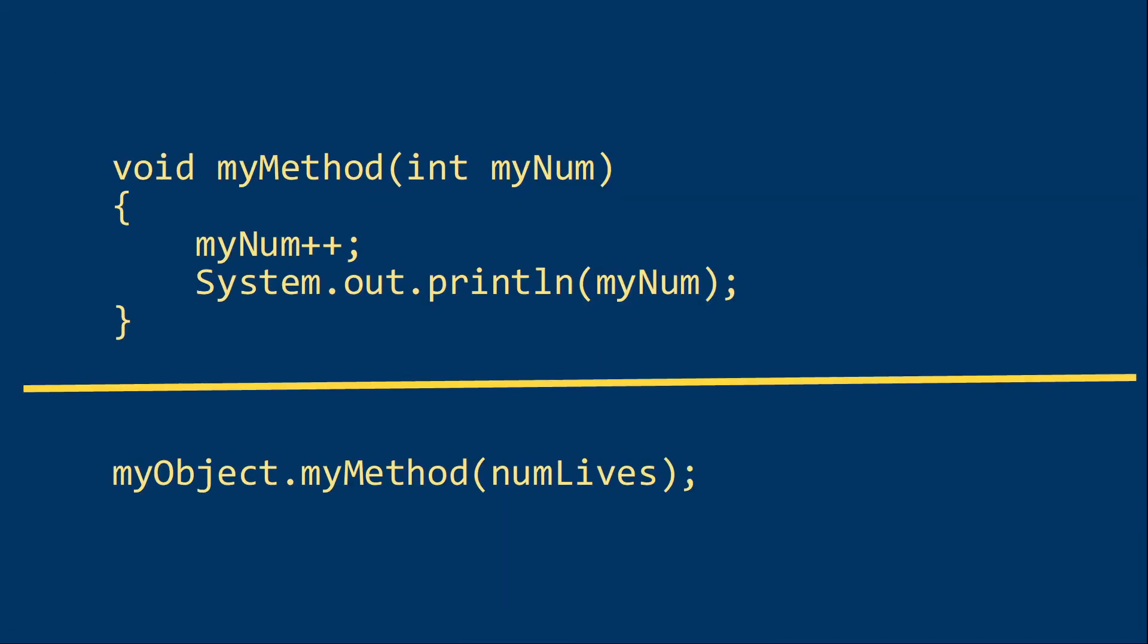So if I have a method in some class like this, got my method, passes the parameter myNum, then inside we add one to the parameter and print it. Now back in main, I'm going to call this method, myObject.myMethod, and pass it myValueNumLives.